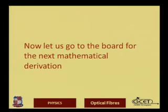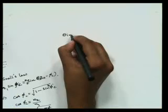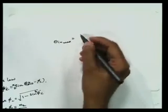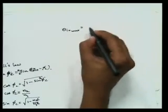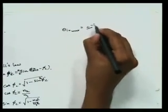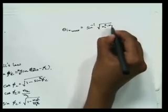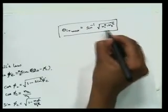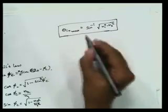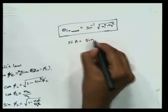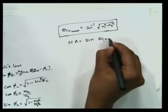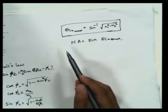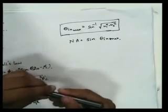From the derivation, the maximum acceptance angle theta_in_max — the maximum angle at which light is accepted inside the fiber optic cable — is: theta_in_max = sin⁻¹(sqrt(n1² - n2²)). This is called the acceptance angle. The numerical aperture (NA) is defined as sin(theta_in_max), and both the acceptance angle and numerical aperture are major characteristics of the fiber optics cable.